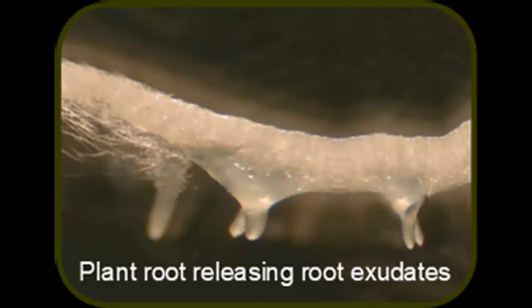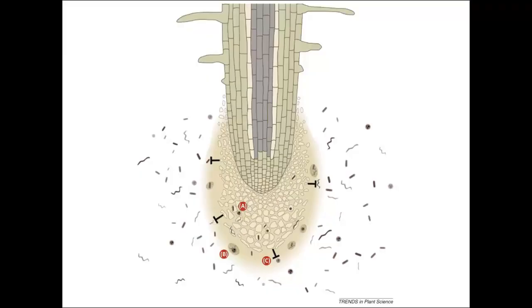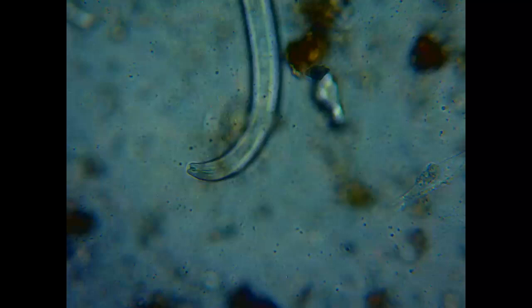Bacteria can eat non-soluble minerals and bring it into its body, at which point it is now soluble. So when protozoa, such as amoebas or flagellates, come in and they eat the bacteria, that food is a little too rich for the protozoa and ends up pooping out nutrients in a soluble form. Nematodes will also eat bacteria.